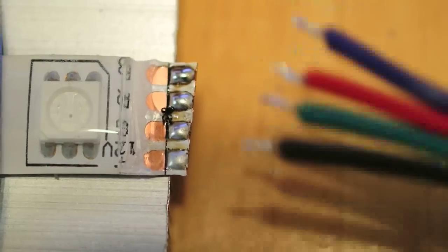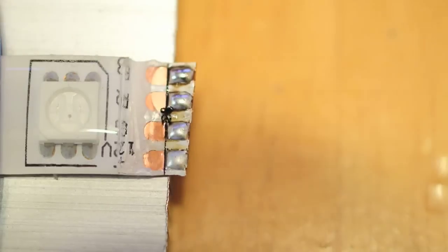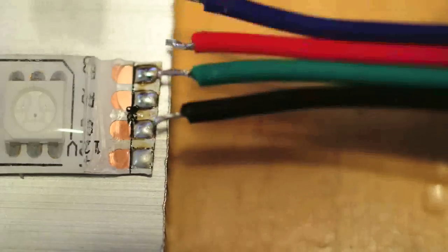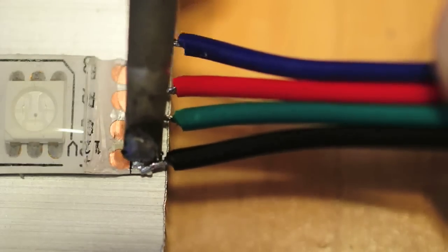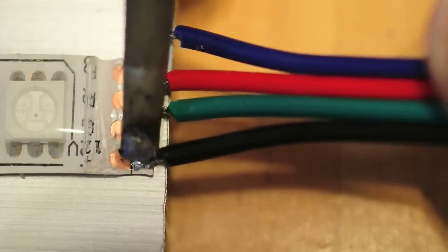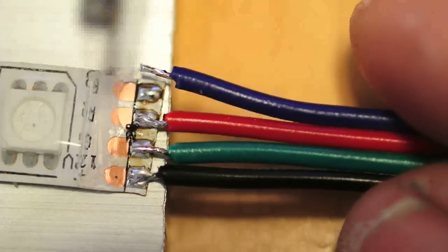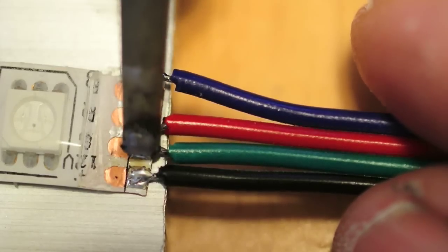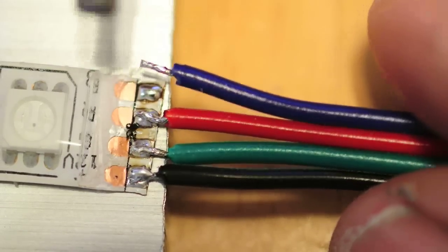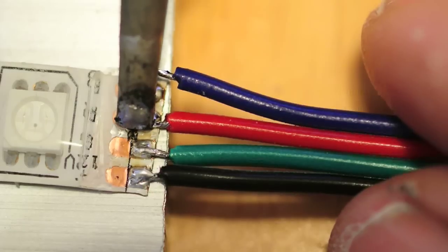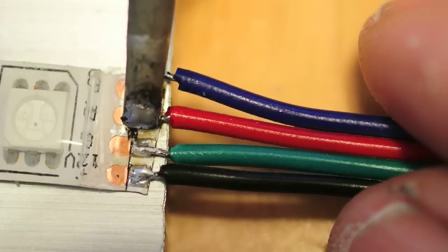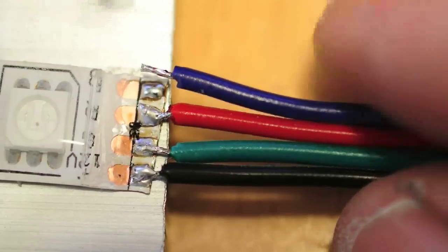And essentially what we do is we just... And I'm going to move this back just a bit, like that. Because I'm going to be pushing down. So we'll start off with the black. And just kind of push this down into that tin wire and hold it until it cools down. Then we'll do the green. And then the red. And finally the blue.